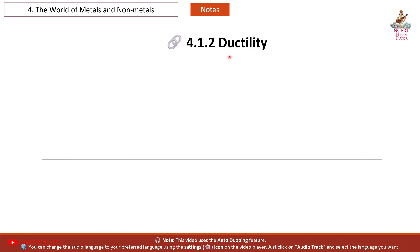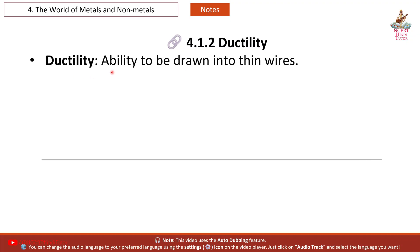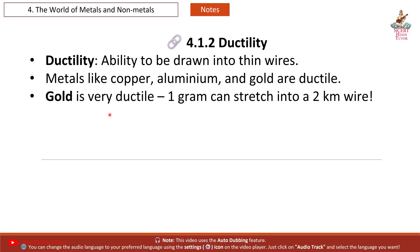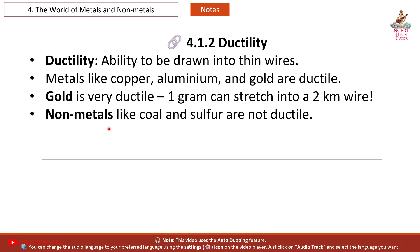4.1.2 Ductility: the ability to be drawn into thin wires. Metals like copper, aluminium and gold are ductile. Gold is very ductile — just 1 gram can be stretched into a 2 km wire. Non-metals like coal and sulphur are not ductile.